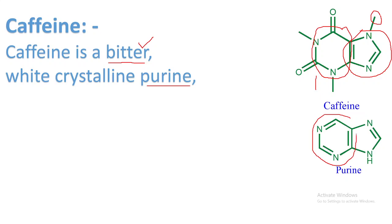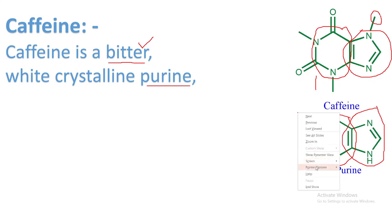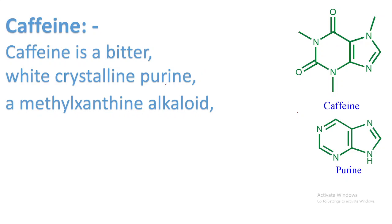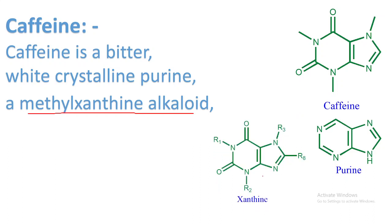Purine consists of a pyrimidine ring and an imidazole ring fused to each other — this is the basic structure of purine. This same ring structure we can see in caffeine. We can also call caffeine a methylxanthine alkaloid, because xanthine is essentially purine with keto groups present. In caffeine, there are additional methyl groups compared to xanthine, so caffeine is a methylxanthine alkaloid.